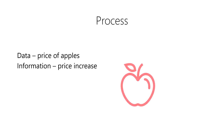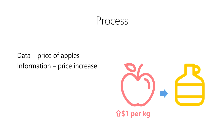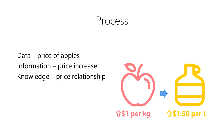Then, from many years of observation, we've learned that when the price of apples goes up by $1 per kilogram, the price of apple cider will likely rise by $1.50 per liter in the following month. We acquired knowledge when we learned about the relationship between an increase in the price of apples and an increase in the price of apple cider.